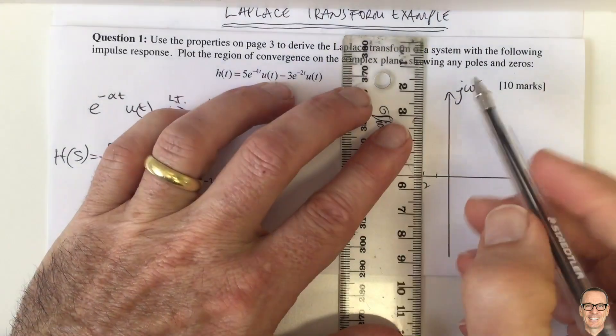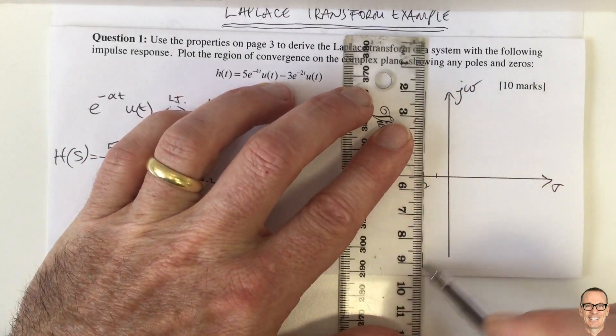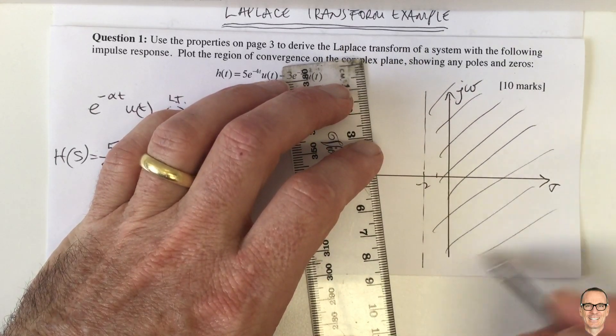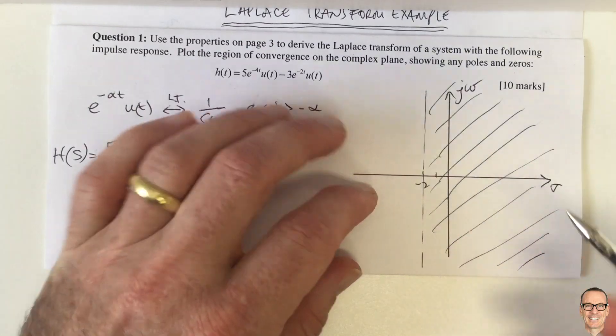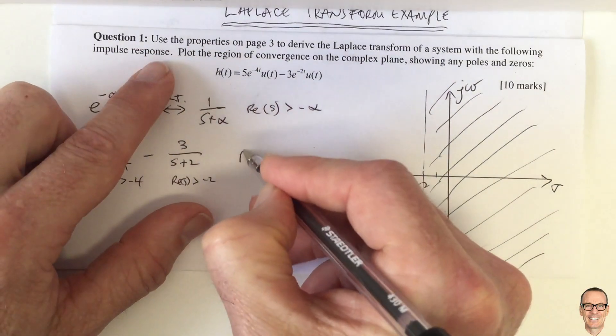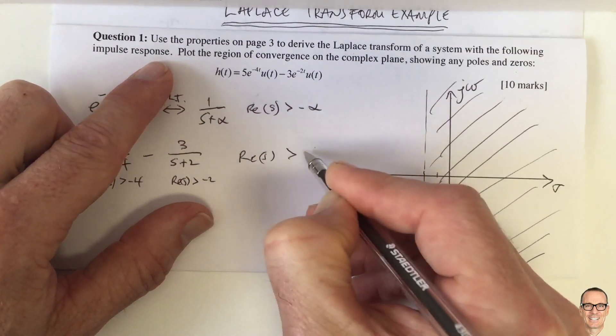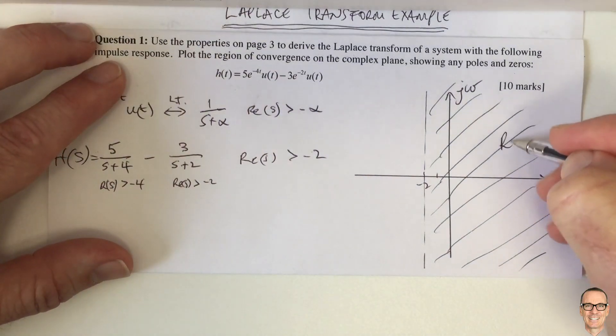So there's a vertical line here, and it has to be bigger than that line. So this is the region of convergence here. Okay, so the real part of s has to be bigger than minus 2, ROC.